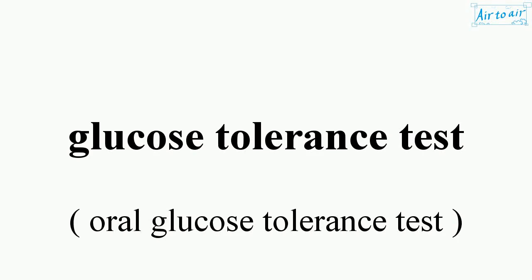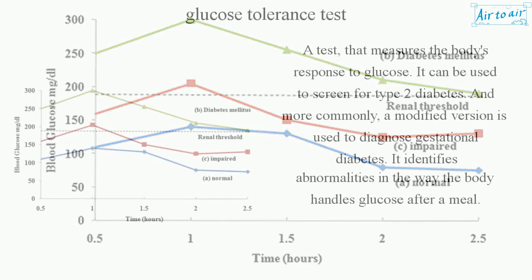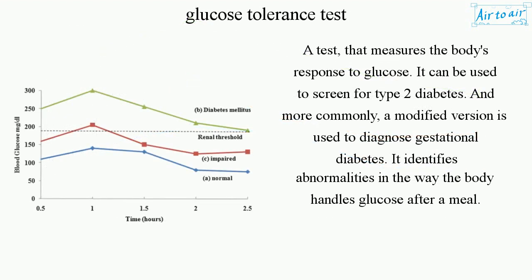Glucose Tolerance Test. A test that measures the body's response to glucose. It can be used to screen for type 2 diabetes, and more commonly, a modified version is used to diagnose gestational diabetes. It identifies abnormalities in the way the body handles glucose after a meal.